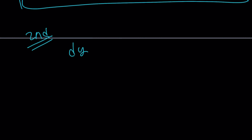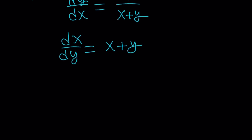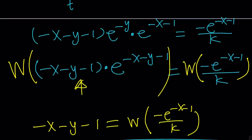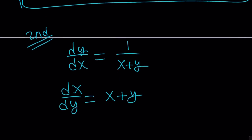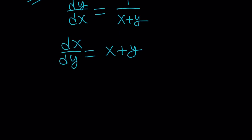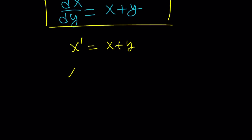Now let's look at the alternative second method. We have dy over dx equals 1 over x plus y. We can flip both sides to get dx over dy equals x plus y, treating x as a function of y. This can be written as x prime minus x equals y, where the prime denotes differentiation with respect to y. We notice that x and y have essentially swapped roles, and we have a non-homogeneous linear ODE. We start by solving the homogeneous case.